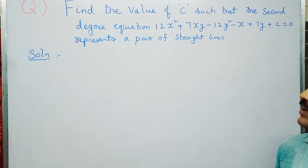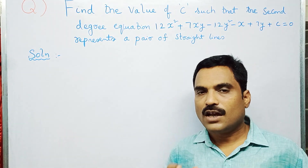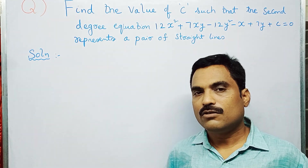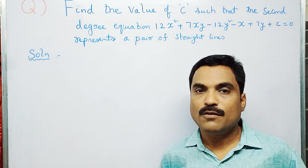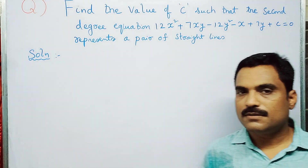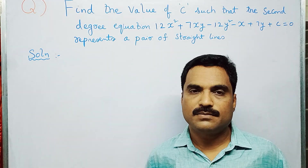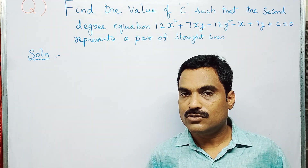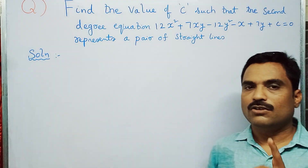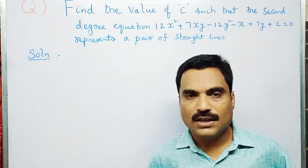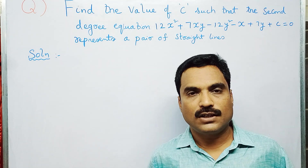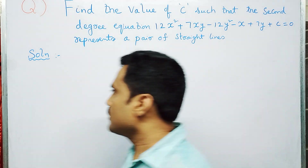They have given a second degree conic equation and they are saying that it satisfies the pair of straight lines condition. Using that condition you need to find the value of C. The condition is: ABC + 2FGH - AF² - BG² - CH² = 0. We need to compare the given equation with the general equation of a conic to obtain all the values and substitute them.